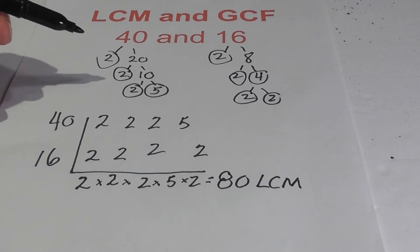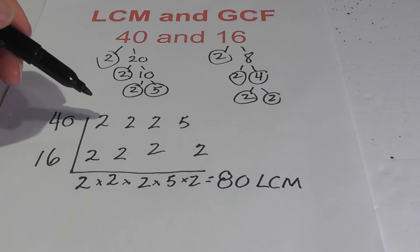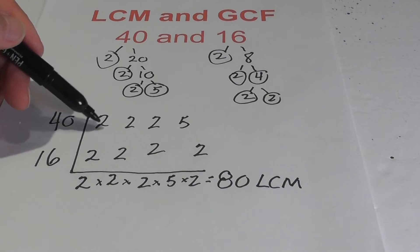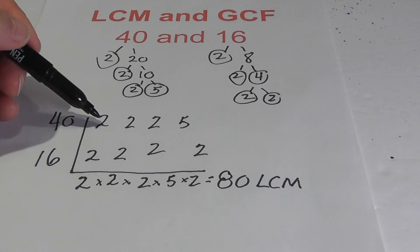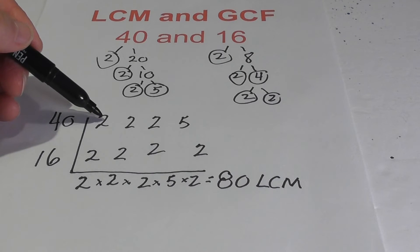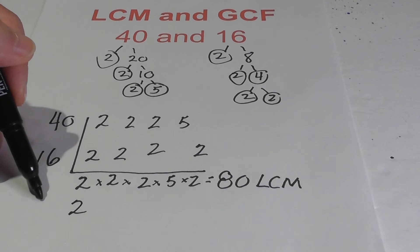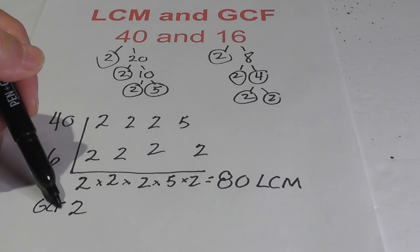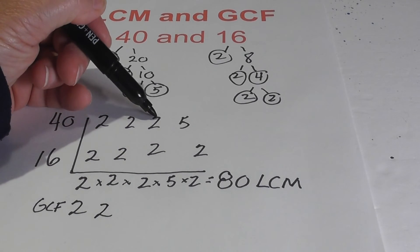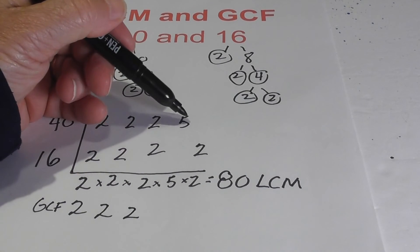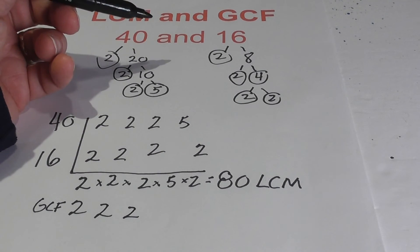For the GCF you can use the exact same chart. You look for pairs because you have two numbers and you bring down one number for each pair. So we have a pair of 2, so I'm going to write the 2. There's one 2. Let's bring down another 2, bring down another 2. We don't have a pair of 5s, and we don't have another pair of 2s.